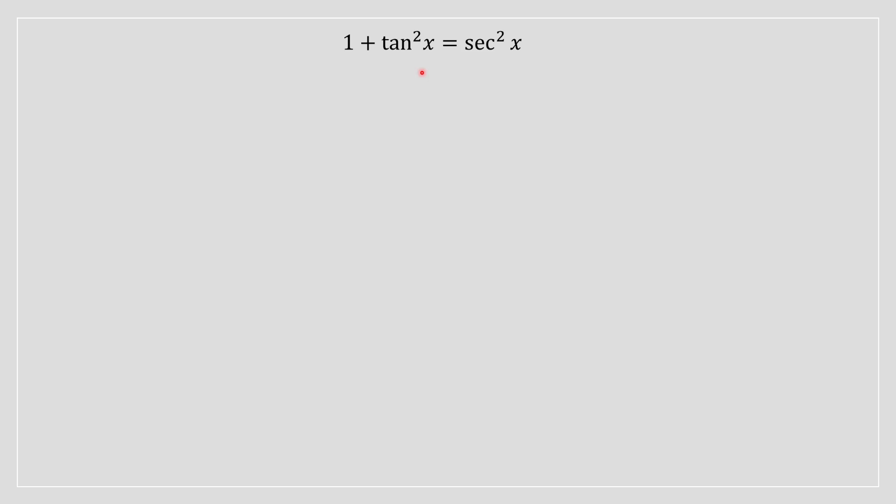Oh hey lads, it's Danny here today bringing you a lovely video on why this trig identity is equal to secant squared of x. Why is 1 plus tan squared of x equal to secant squared of x?